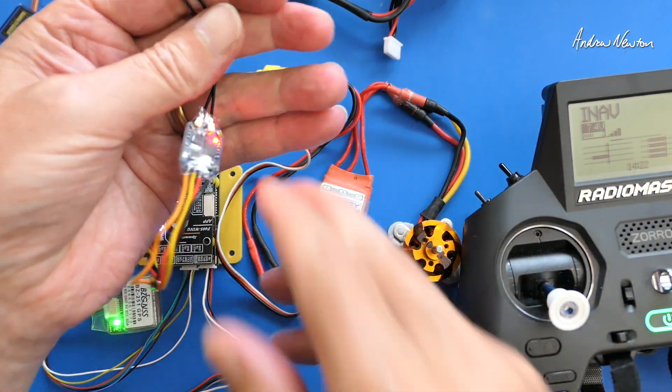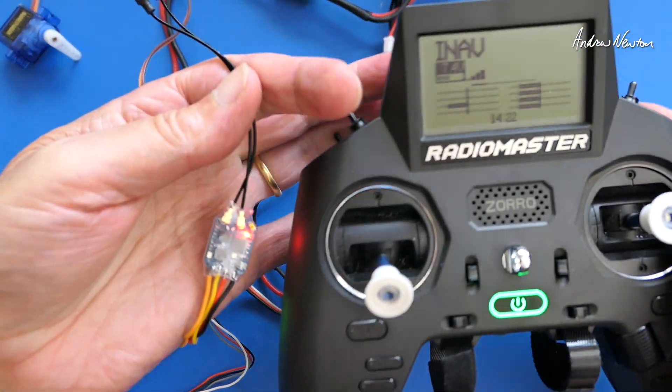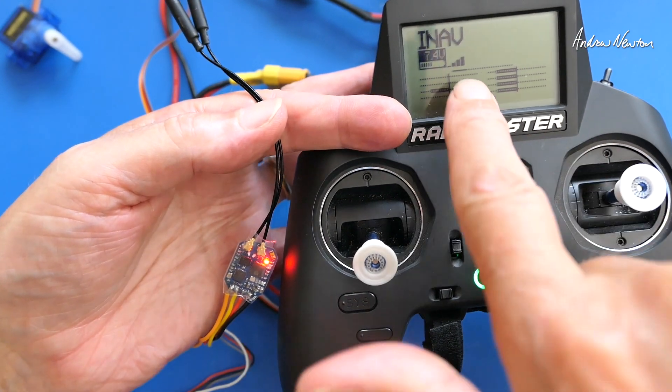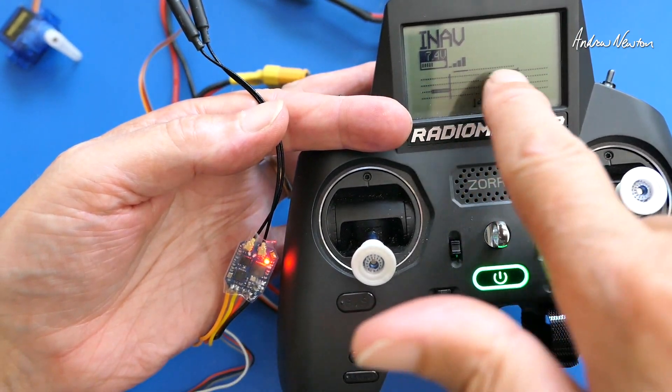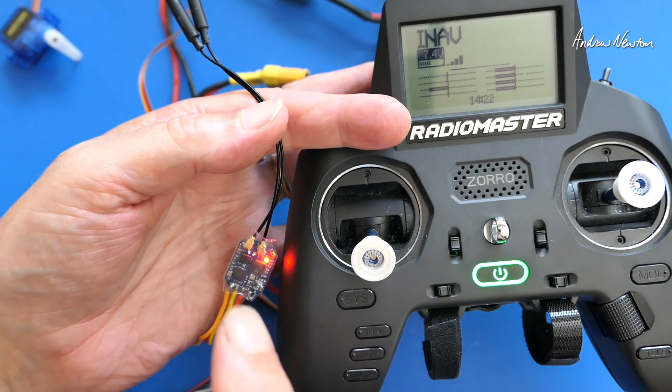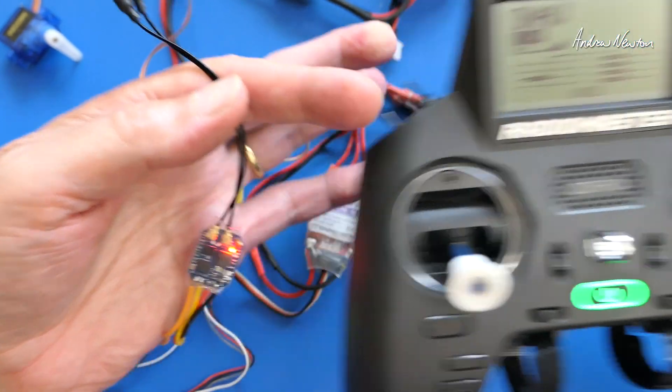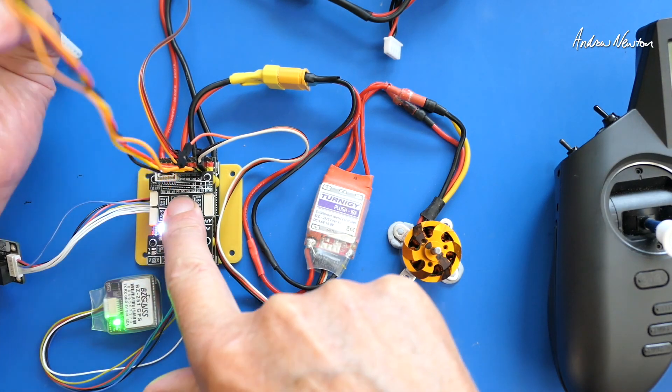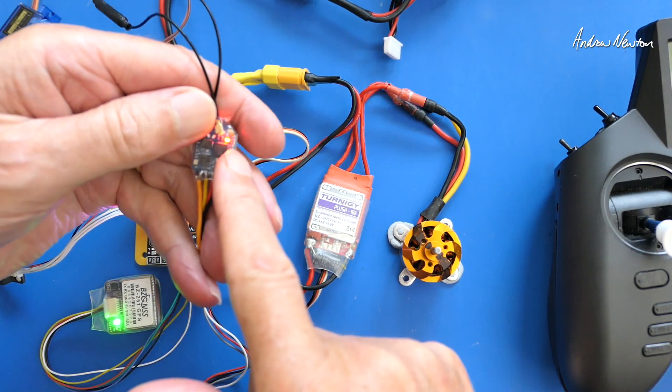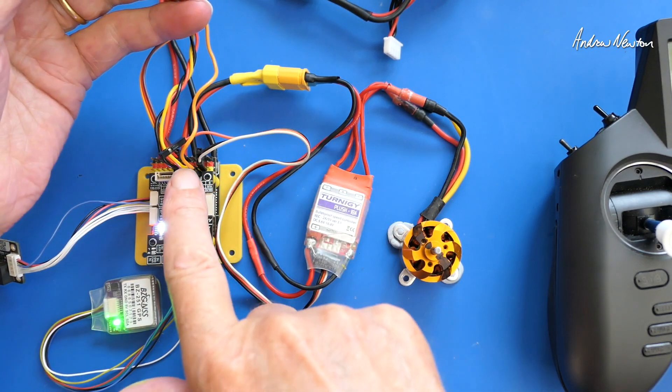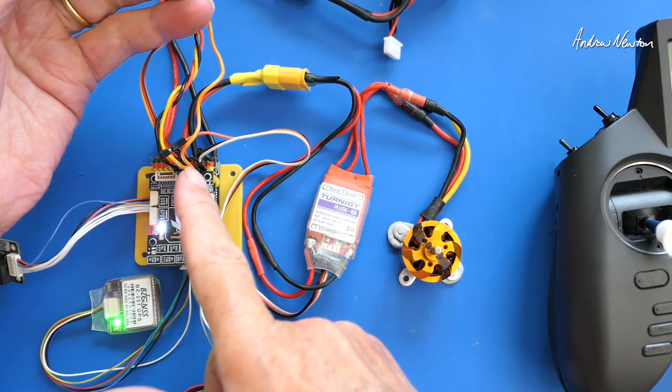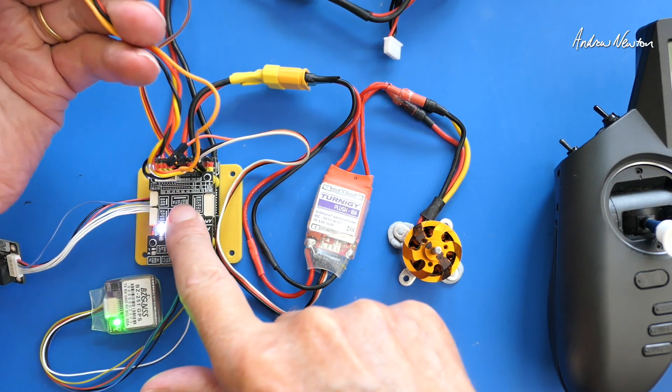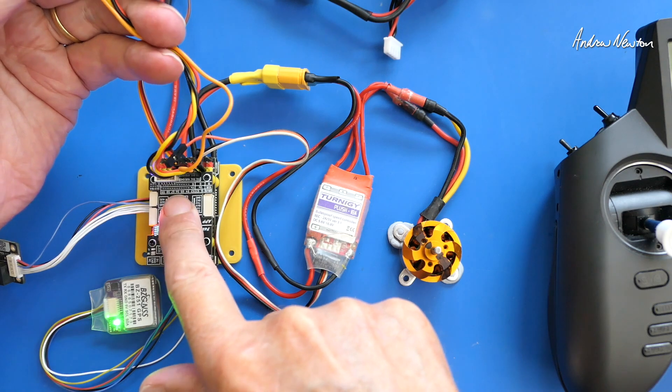Now the next thing to check is that the receiver and the radio are talking to each other. They are bound properly and connected to the board properly. I can see I have signal bars on the screen there, so I know that they are bound and talking to each other. Receiver is connected to UART1 on this board and we're getting power from the board, so that's all good. The only thing that may be a problem is that we have the RX and the TX cables the wrong way around.